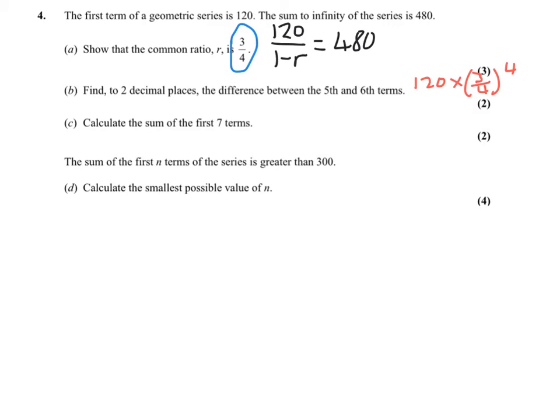Part C, calculate the sum of the first 7 terms. So you've got S7, sum 7, is 120. Again, we're using these formulas from the formula booklet: 1 minus 3 quarters to the power of 7, all over 1 minus 3 quarters. You should be able to figure that out.